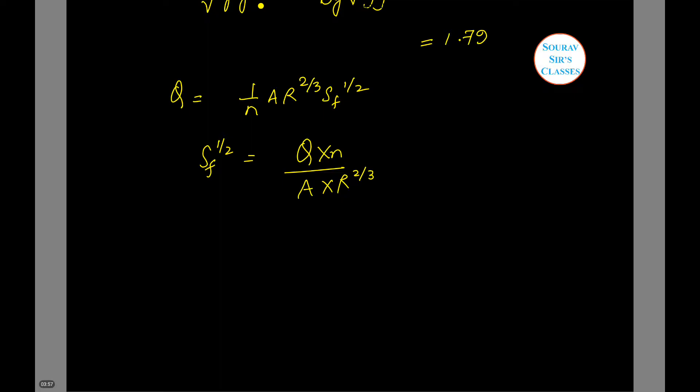Substituting: Sf = (4 × 0.01 / ((2 × 0.5)(2 × 0.5/(2 + 2 × 0.5))^(2/3)))². This gives Sf = 6.29 × 10^(-3).